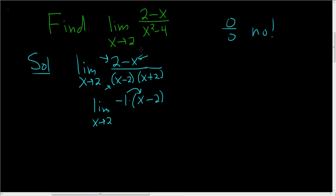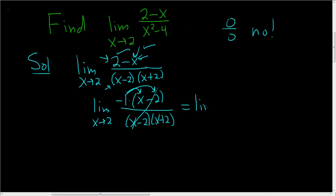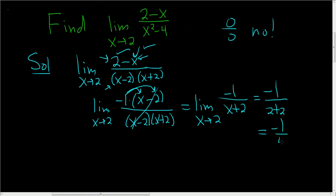Negative 1 times x is negative x — checks. Negative 1 times negative 2 is positive 2 — checks. So in the bottom we still have x minus 2 times x plus 2. And now these cancel, so we end up with the limit as x approaches 2 of negative 1 over x plus 2. At this point we can just plug in 2. So we get negative 1 over 2 plus 2, which is equal to negative 1 over 4, and that is the limit.